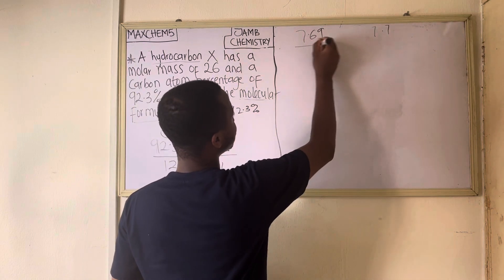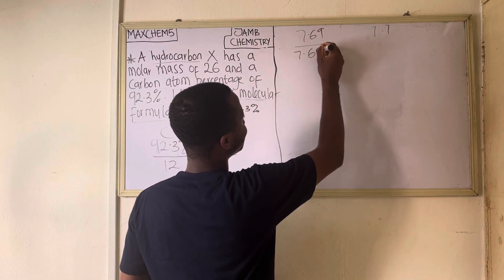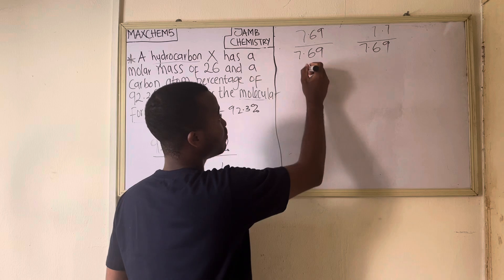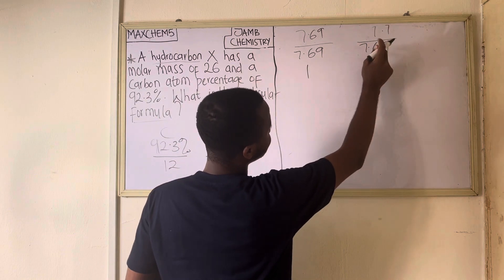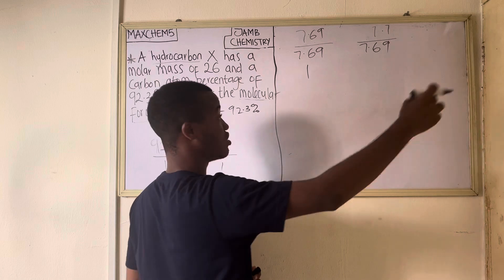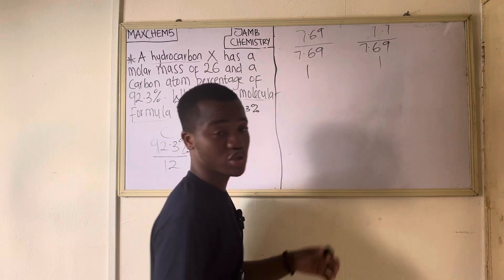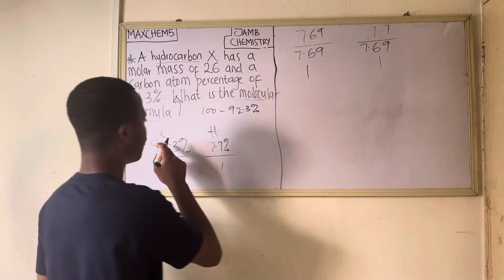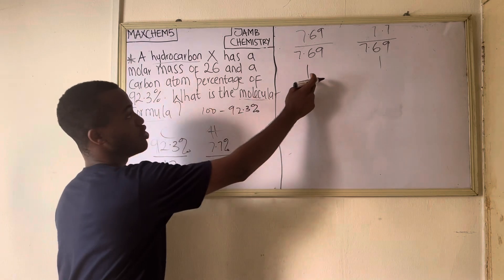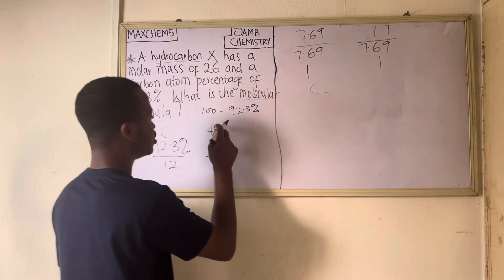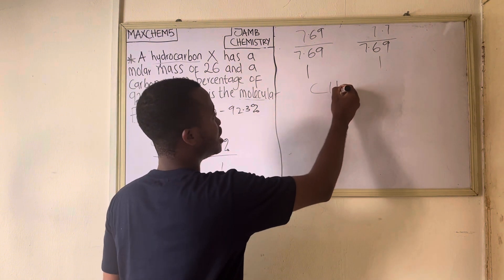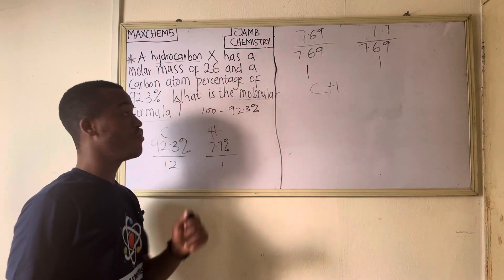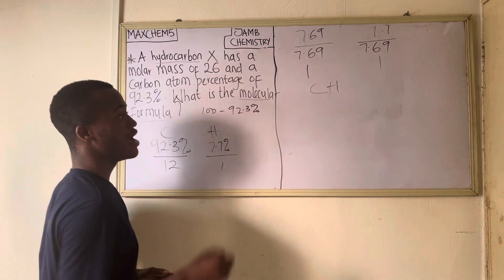The lowest value here is 7.69. So we divide both sides by 7.69: 7.69 divided by 7.69 gives us 1, and 7.7 divided by 7.69 gives us approximately 1 as well. So from this, we have one carbon atom and one hydrogen atom, giving us the empirical formula CH. This is the empirical formula of this particular compound. But don't forget, we still want to get our molecular formula.